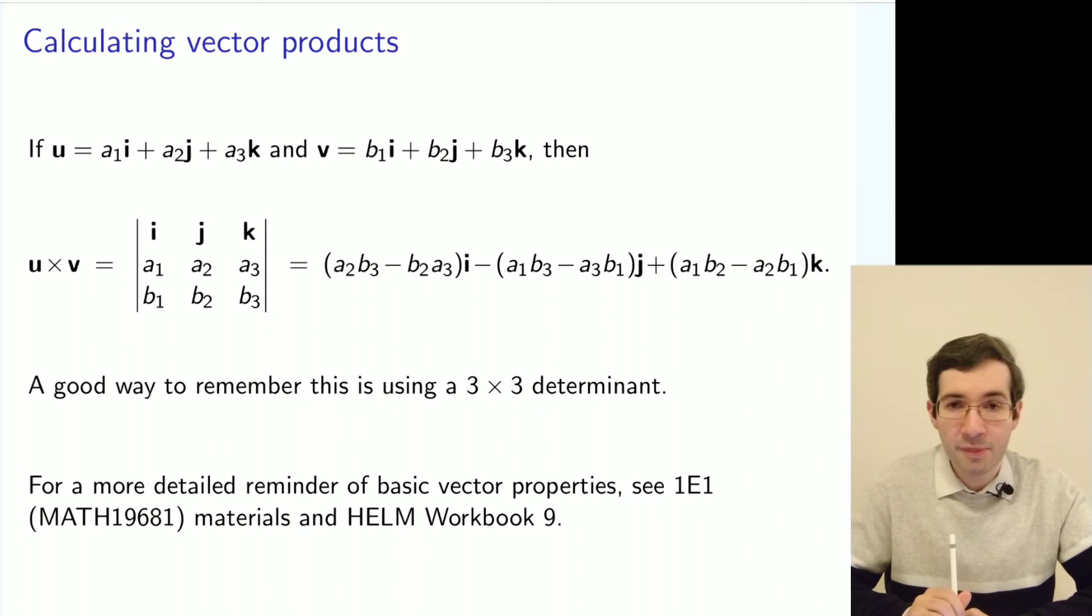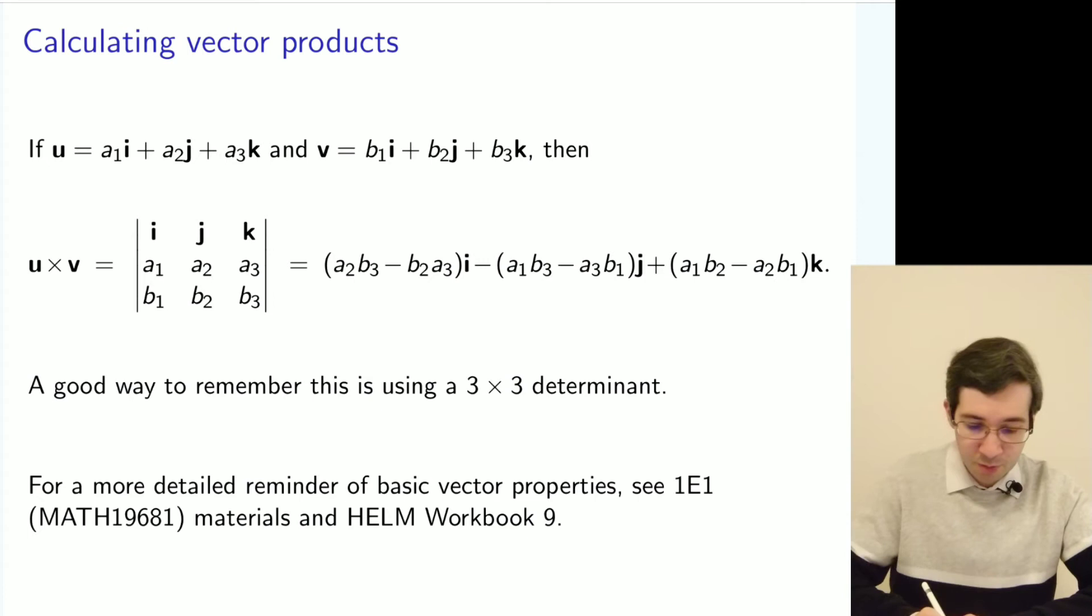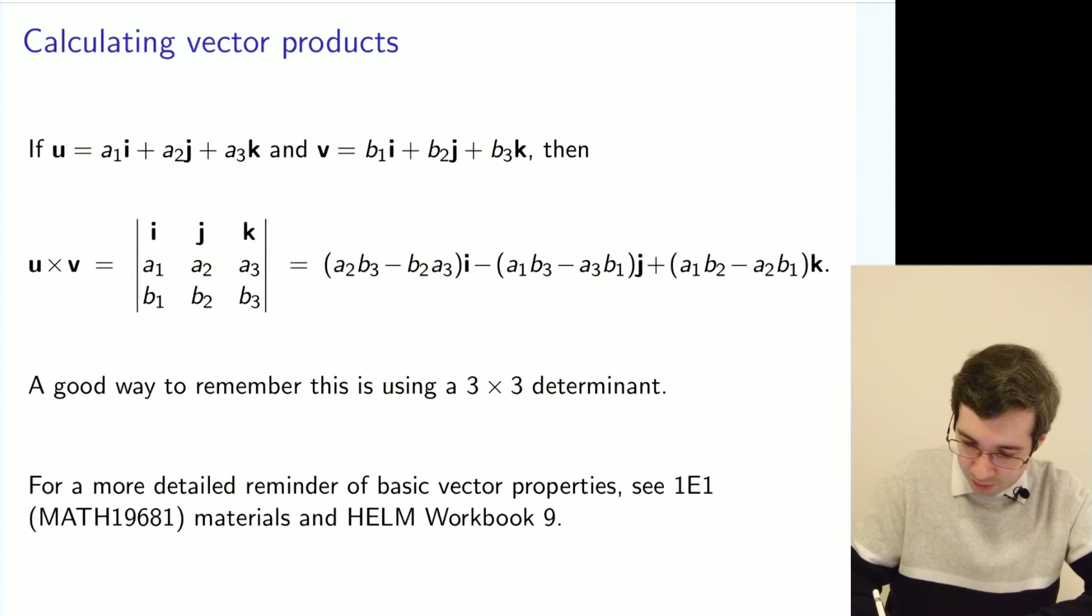The vector product is a fundamentally three-dimensional operation. You always have a vector which is orthogonal to both vectors which produced it. So you have u, v, and the vector product will be orthogonal to both of them.